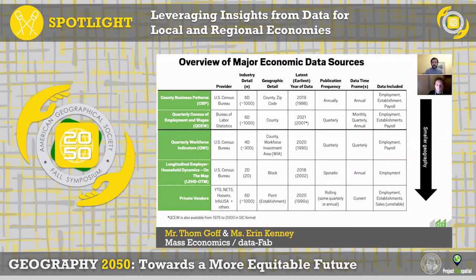Lastly, you have a variety of private firm-level vendors — YTS, NETS, Hubert, Dun & Bradstreet. Those are point-level and they do generally cover all thousand six-digit NAICS codes.